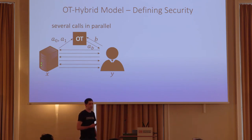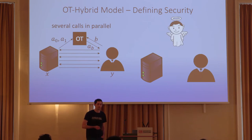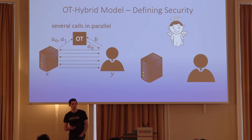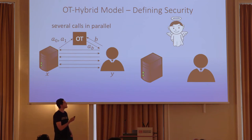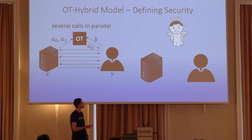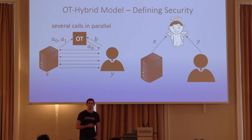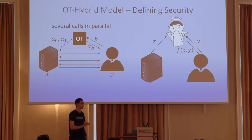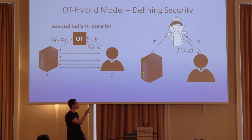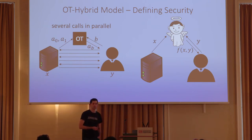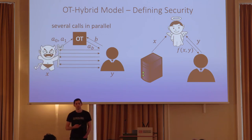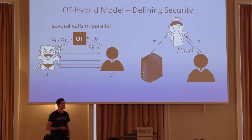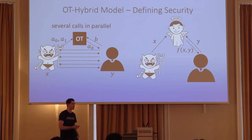The computation in the ideal world proceeds as follows: the server and the client send their inputs to the trusted party, which then computes the output and gives it only to the client, so the server learns nothing. We would like the OT hybrid model to emulate this ideal interaction, and we want this to hold even if a malicious adversary is present. For any adversary corrupting the server, we can simulate the attack in the ideal model.